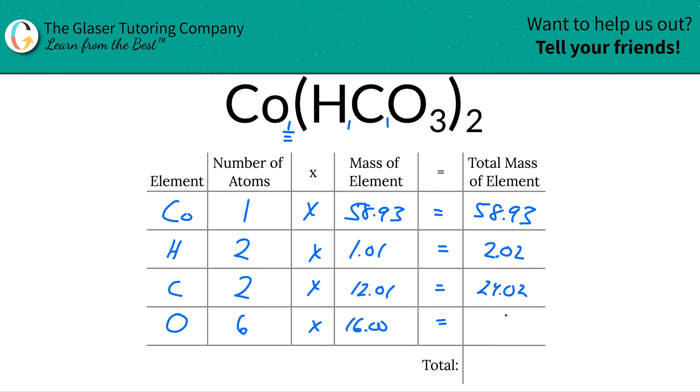Same thing for oxygen - that'll work out to be about 96. To find the total mass of the entire compound, just add this column together. When we add that column together, we get a total of about 180.97.